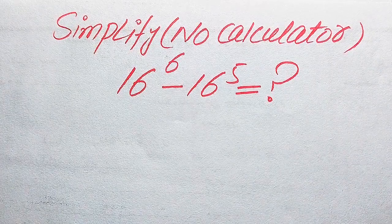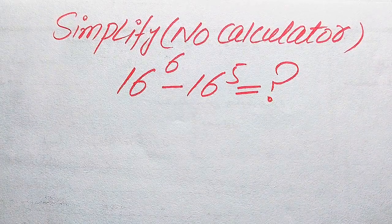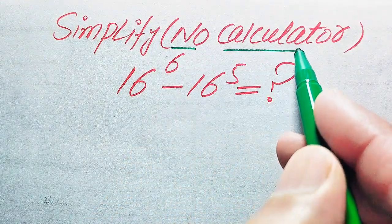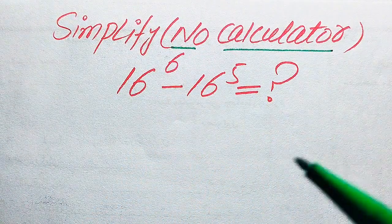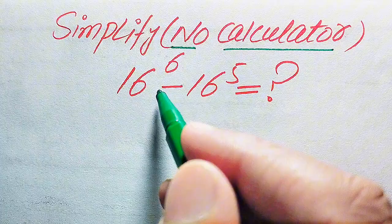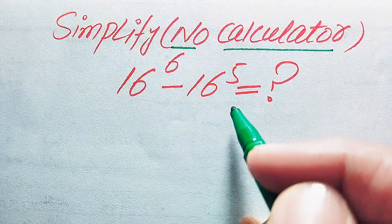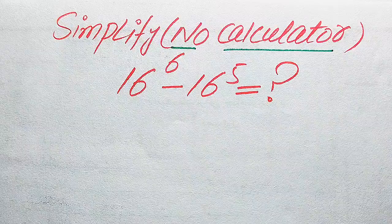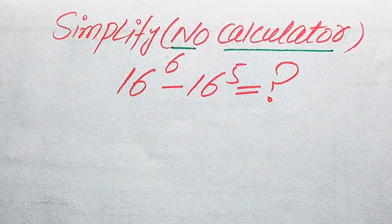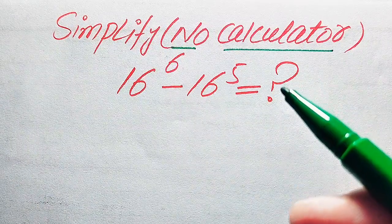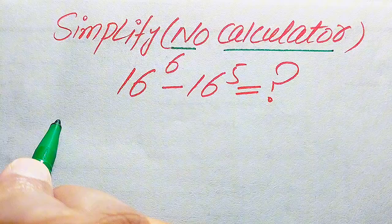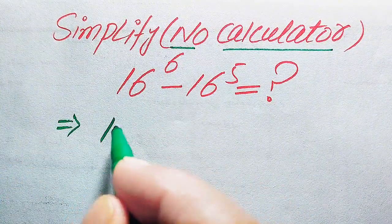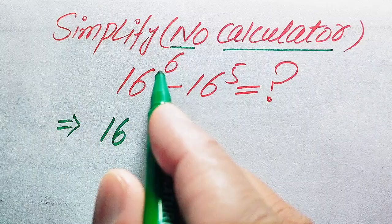Hello everyone. How to simplify this nice algebraic expression without using the calculator — here you see that the calculator is not allowed in this question. If we have 16 to the power of 6 minus 16 to the power of 5, we write this expression into its simplified or lowest form. The very first thing we are going to do is rewrite this expression.